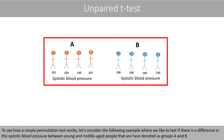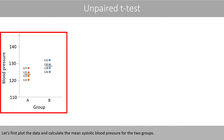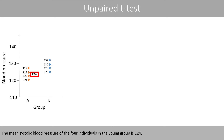To see how a simple permutation test works, let's consider the following example where we like to test if there is a difference in the systolic blood pressure between young and middle-aged people, here denoted as groups A and B. Let's first plot the data and calculate the mean systolic blood pressure for the two groups. The mean for the four individuals in the young group is 124, and 129 for the four individuals in the middle-aged group.